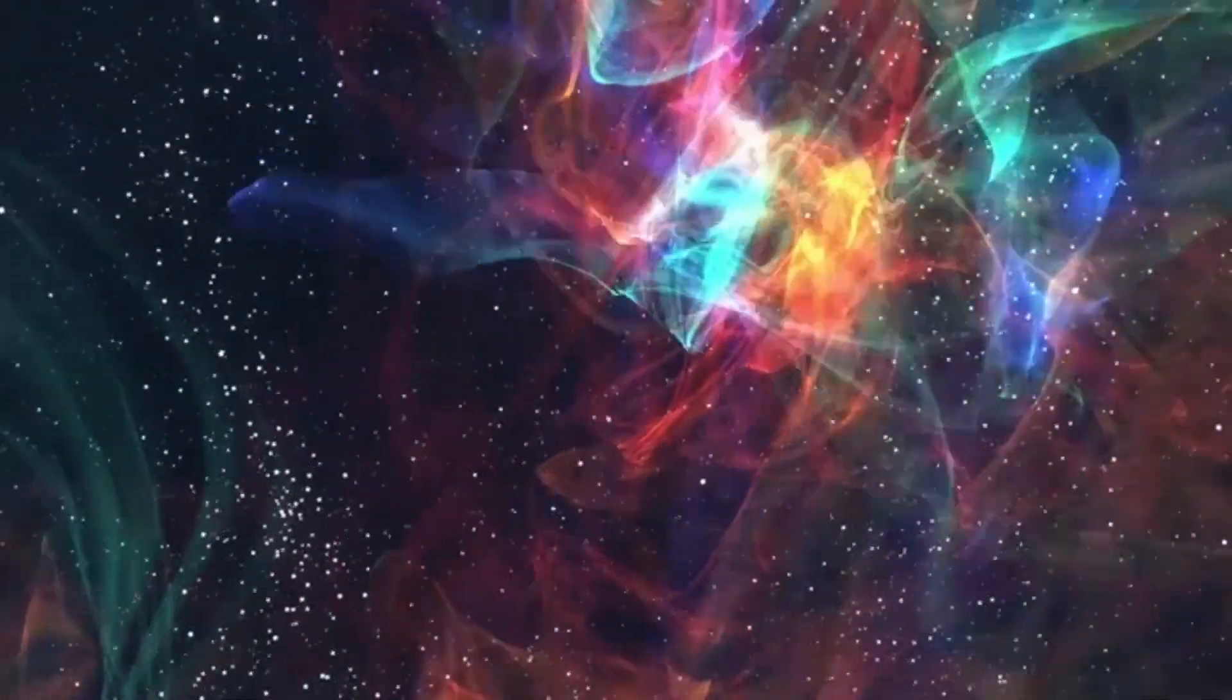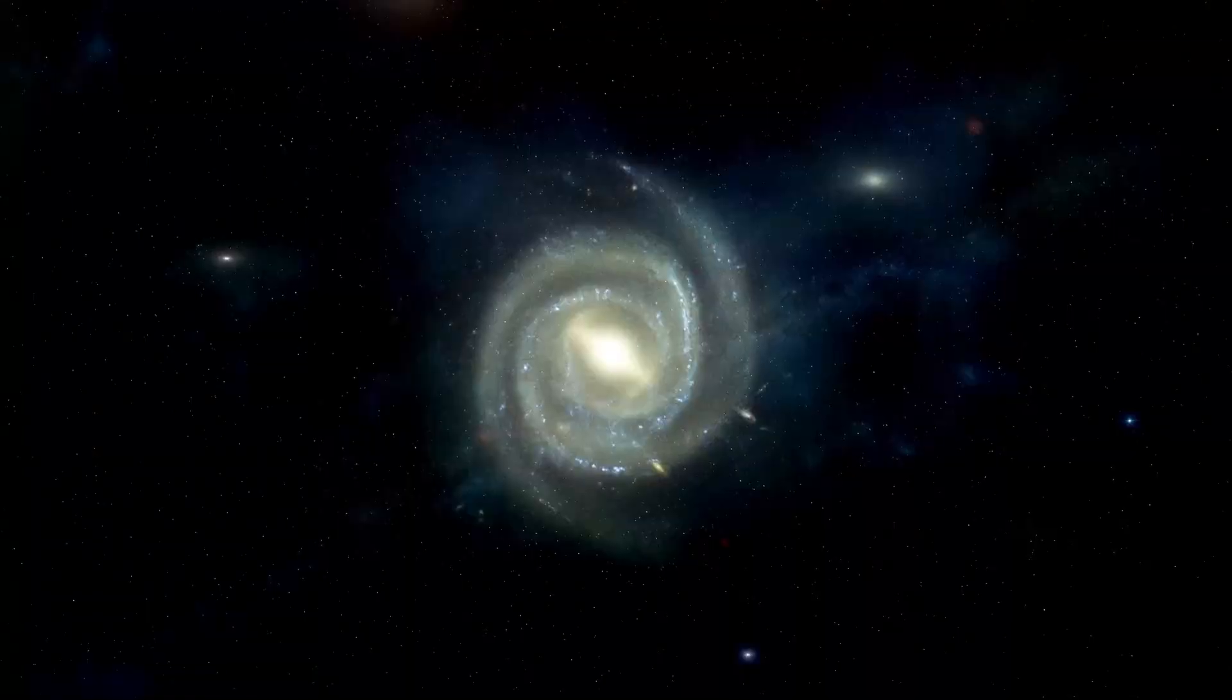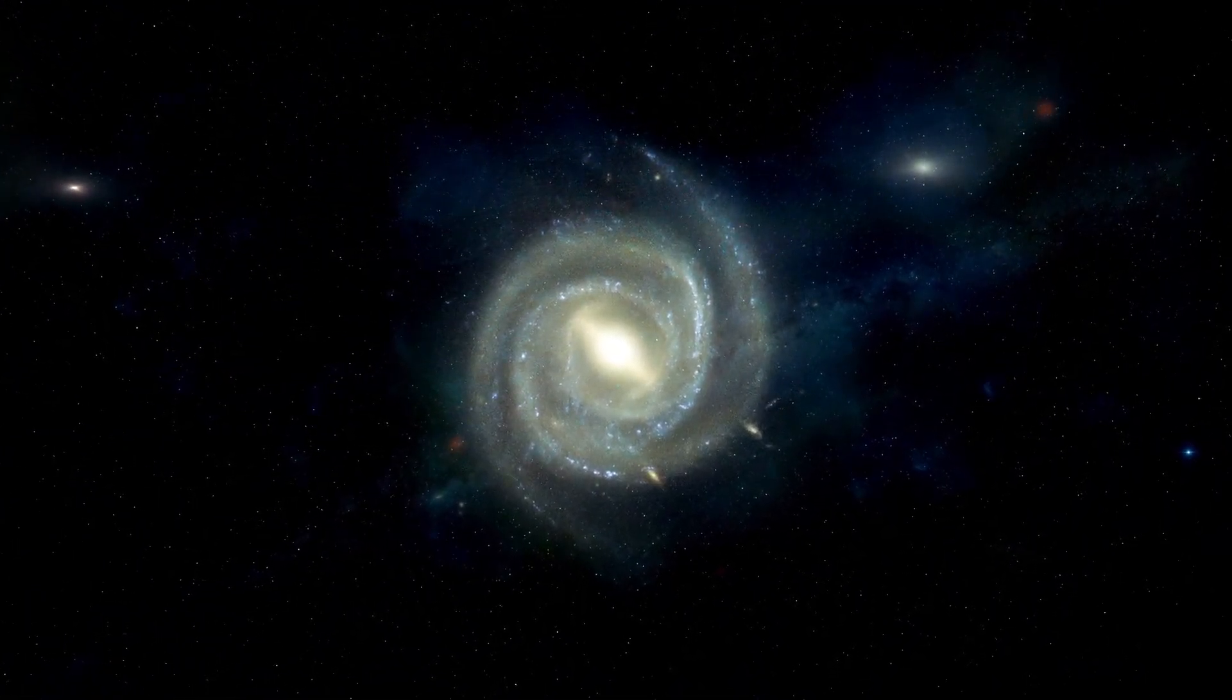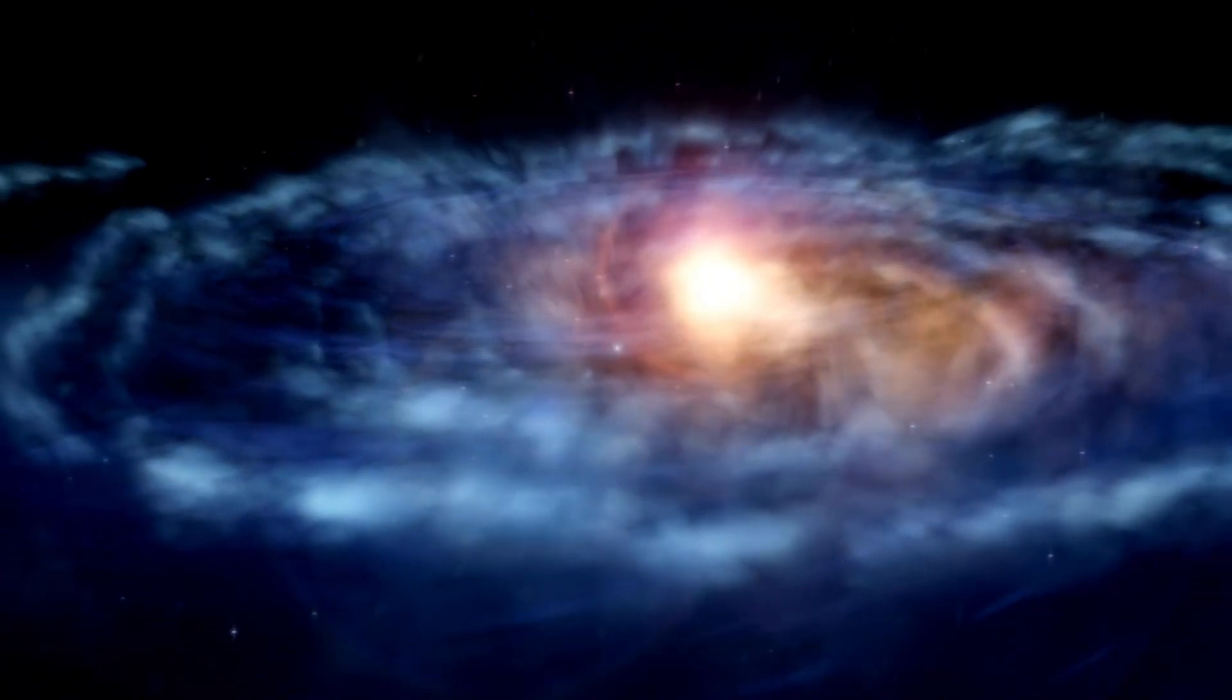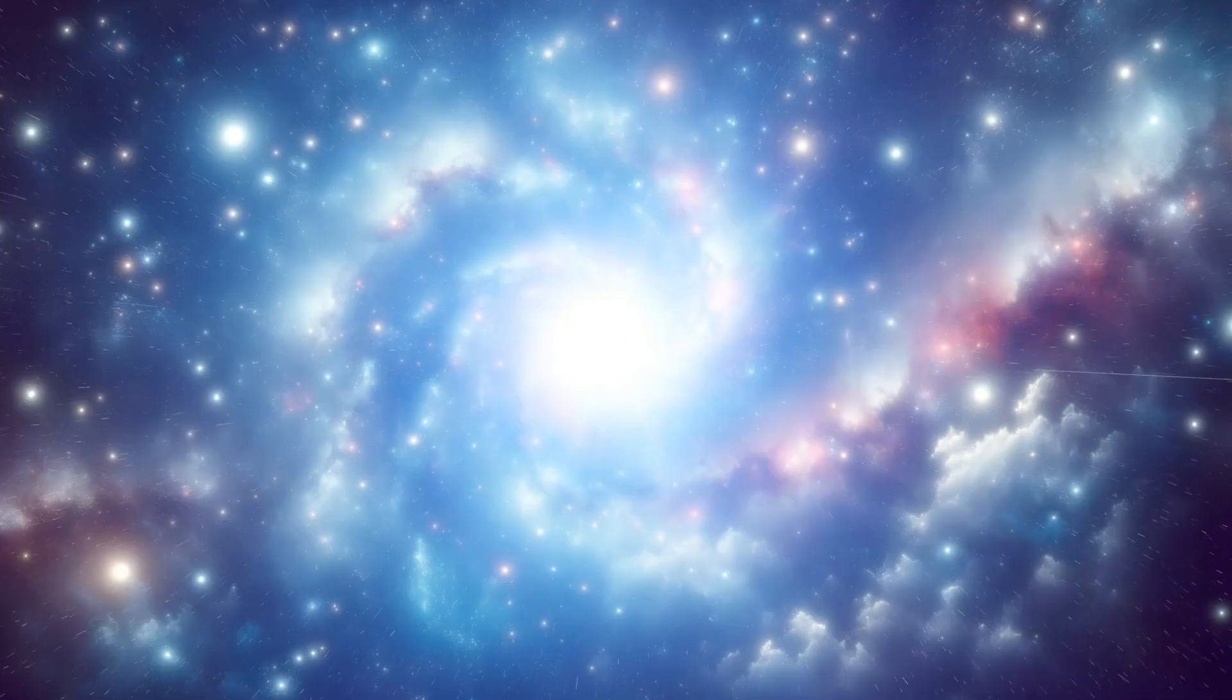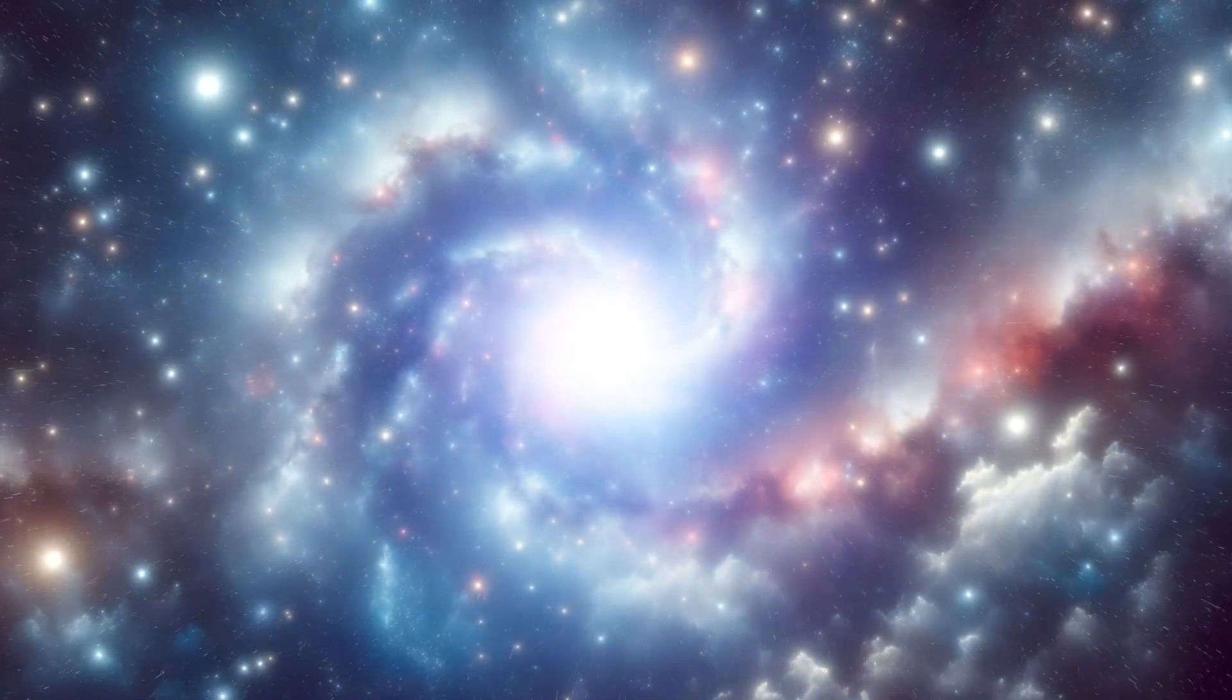Found in the constellation Ursa Minor or the Little Dipper, Polaris shines as a moderately bright yellow-white supergiant star, much larger and brighter than our sun. It's not a solitary star but part of a complex triple star system, with Polaris A and Polaris B forming a binary pair while Polaris B orbits around them. The interactions among these stars create gravitational forces, shaping their orbits and influencing their behavior.